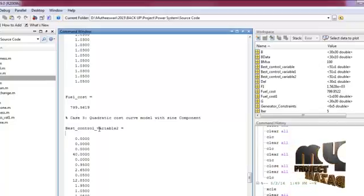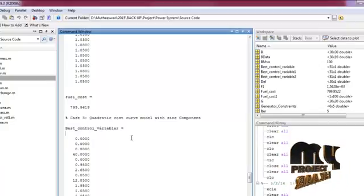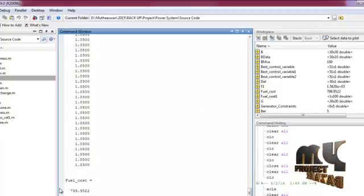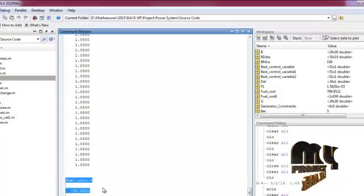The third case is quadratic cost curve model with sine component. In this case also, we obtained the best control variable using ABC algorithm. Finally, we obtained the fuel cost value.